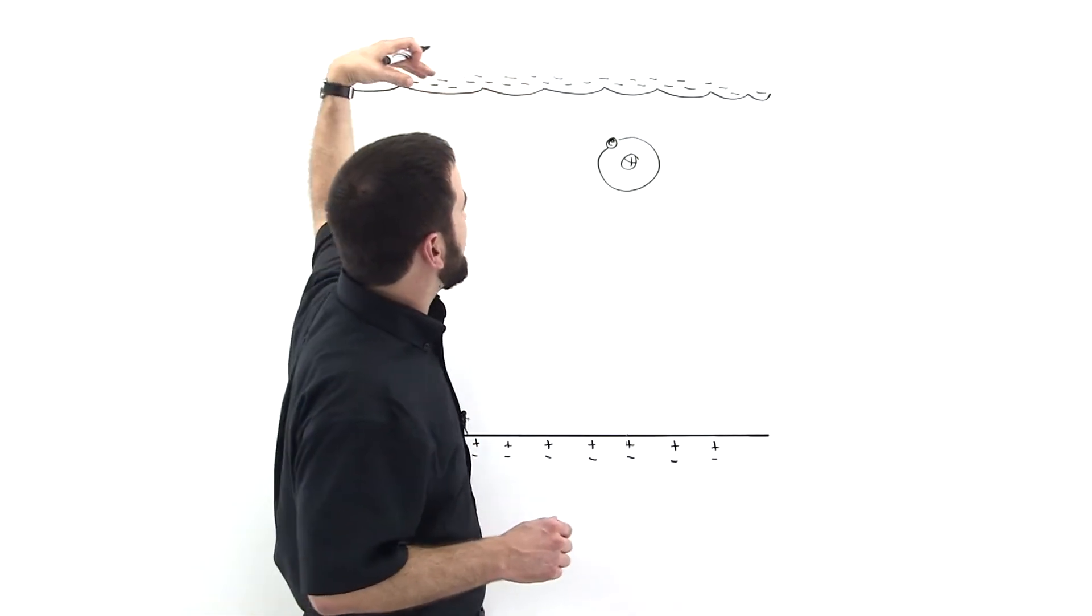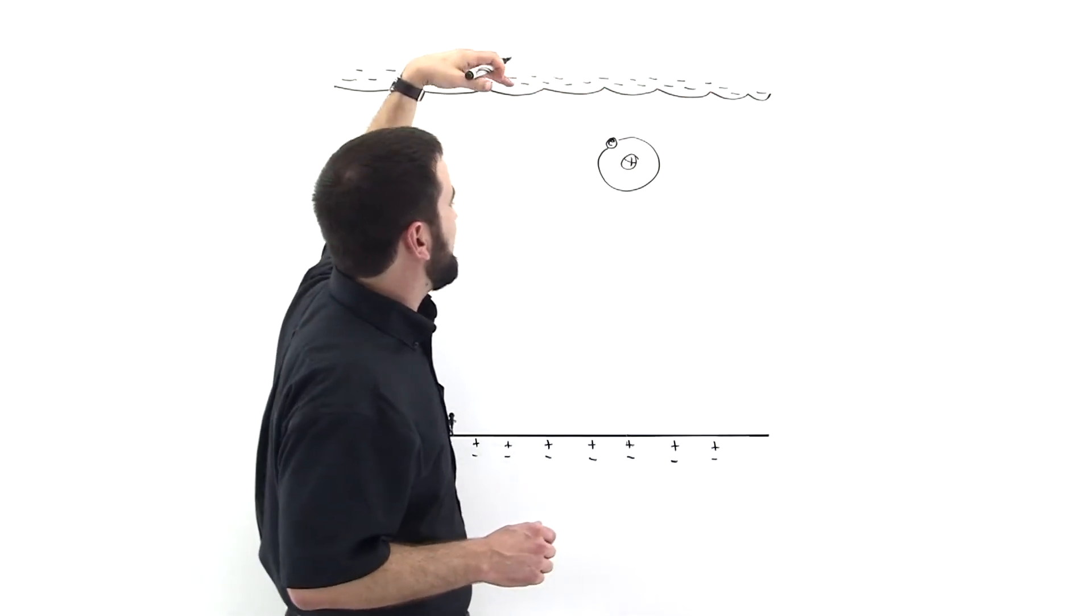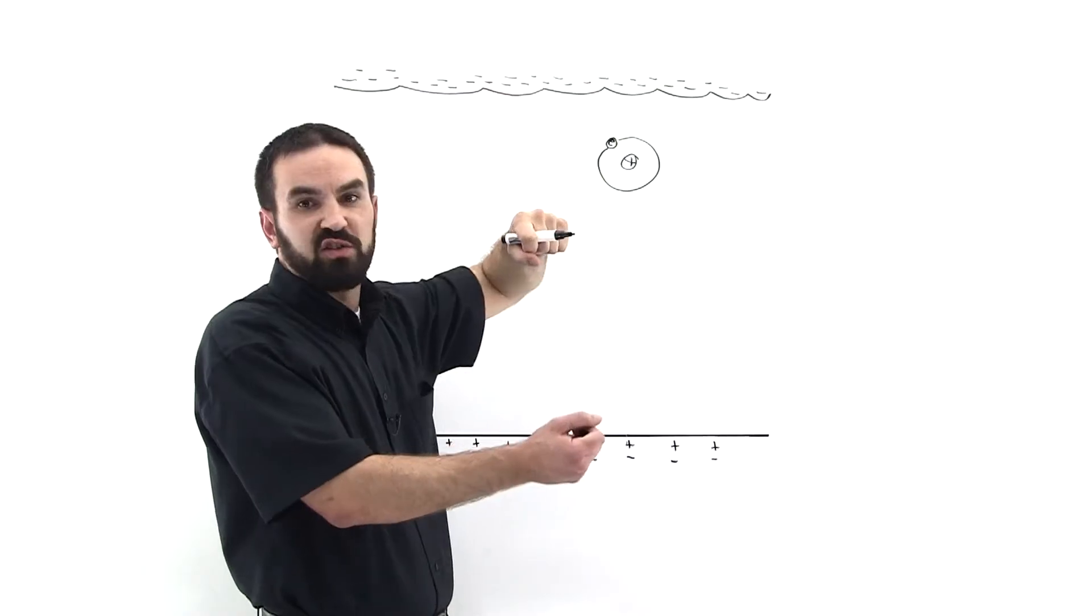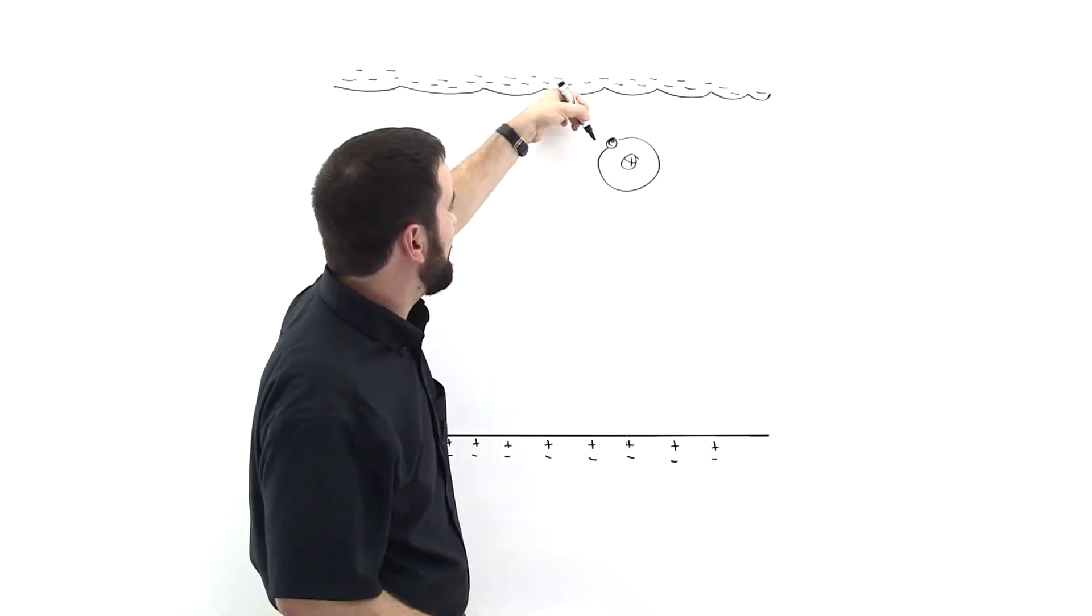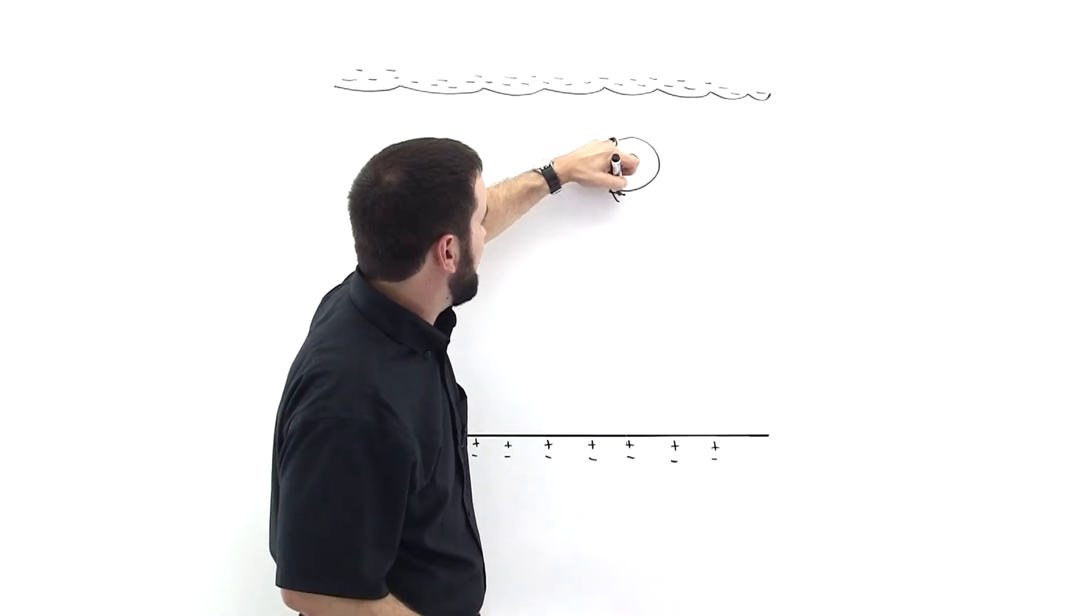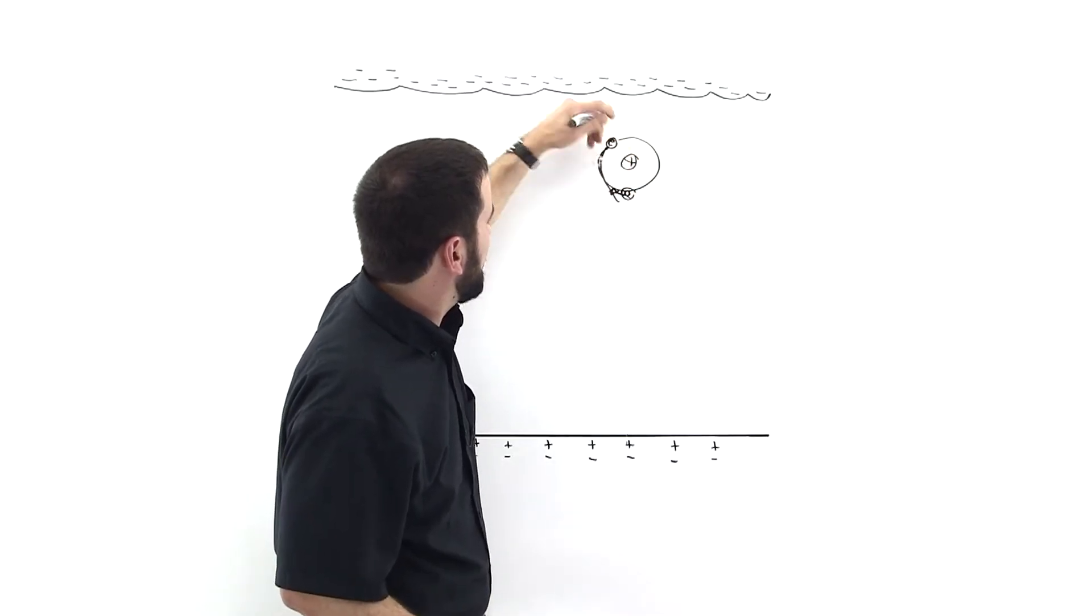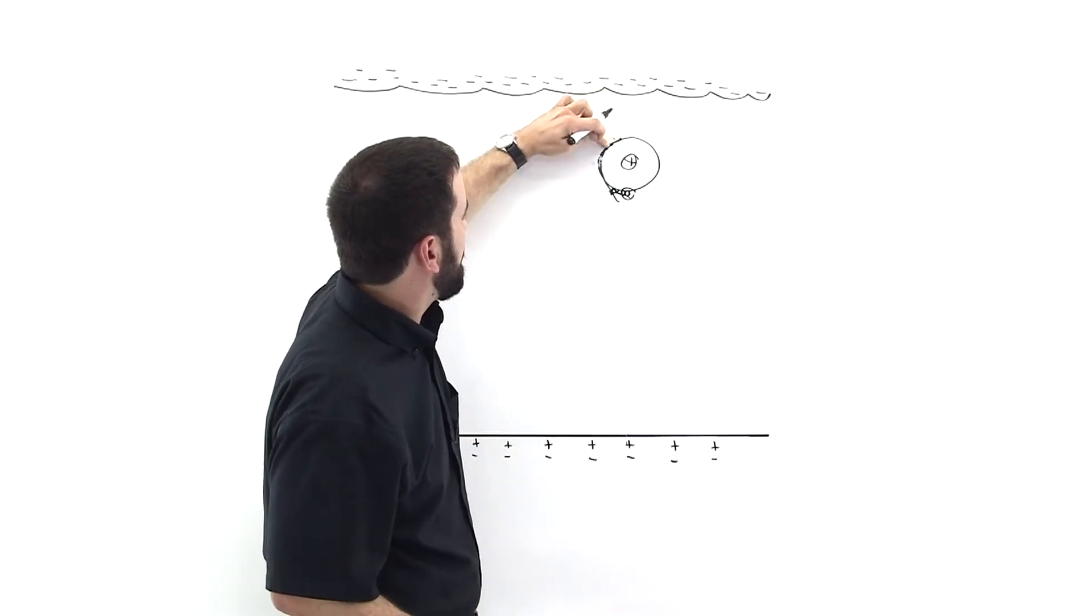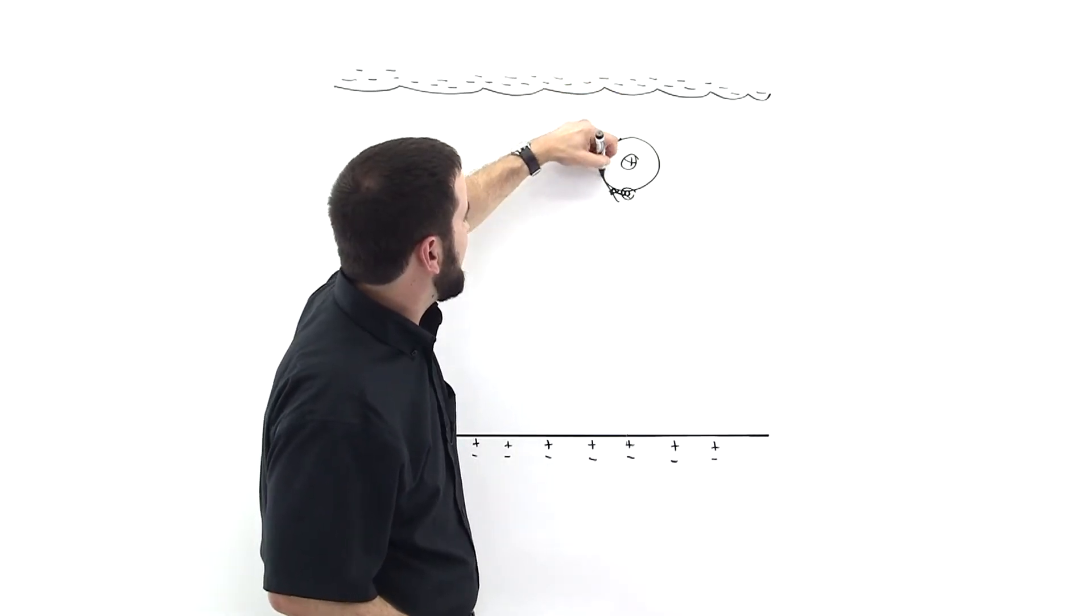What happens is because all of this negative charge is here, and this electron is negatively charged, like charges repel one another, so this charge gets pushed down to this side of the atom. This is no longer here, he's moved to this side of the atom.